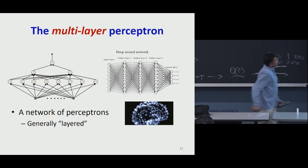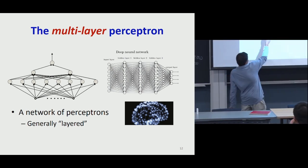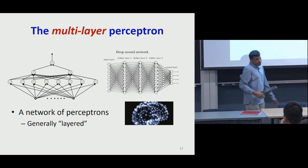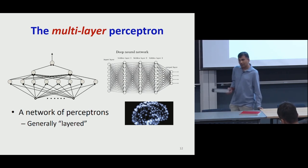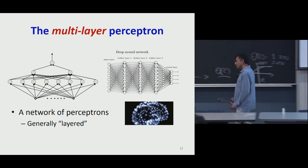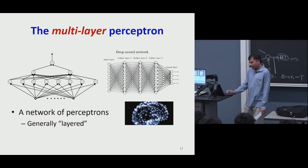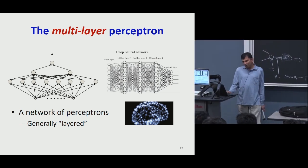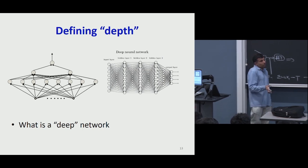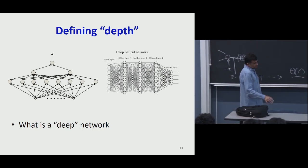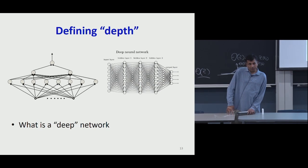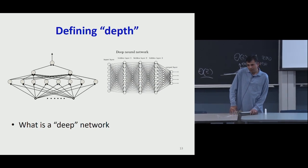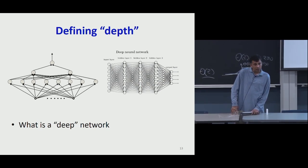For example, how many hidden layers do we have in the structure to the left? Two. And the one to the right? Three. So now we are speaking of deep networks. The title of the class is deep learning. What do I mean by a deep network? The concept comes from graph theory — for a directed graph, it has sources and sinks, and the depth of a graph is the length of the longest path from source to sink.